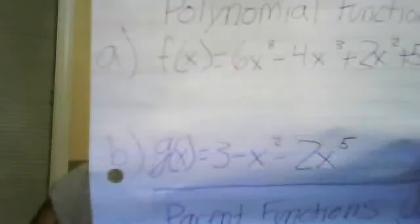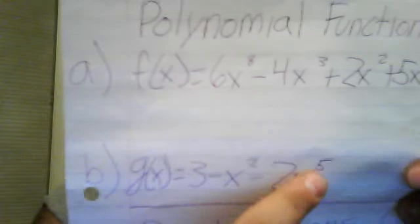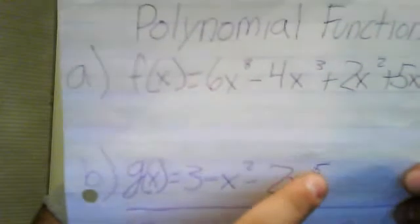You do the same thing like we did on the first one. Find the number with the highest exponent. In this case, it's 5.